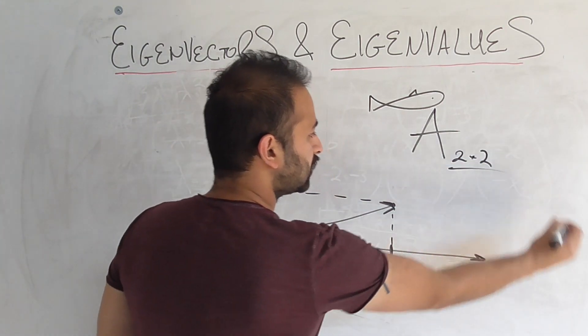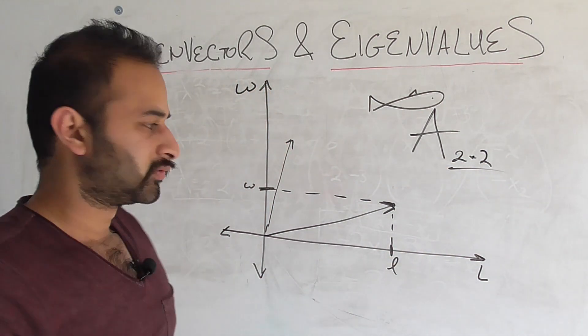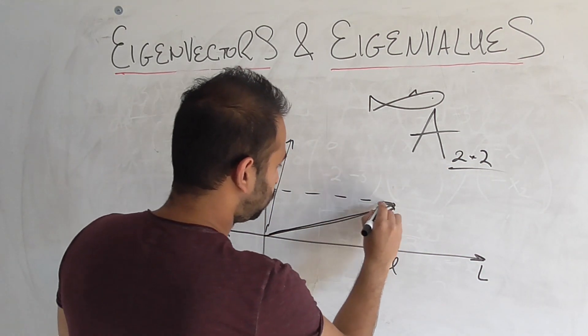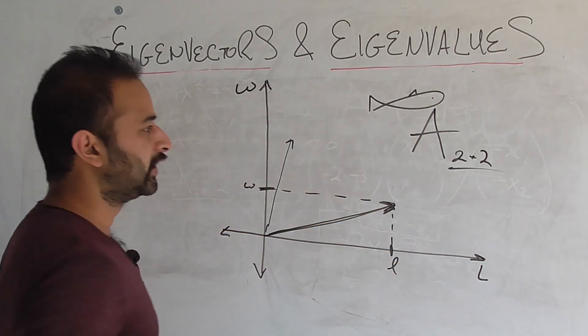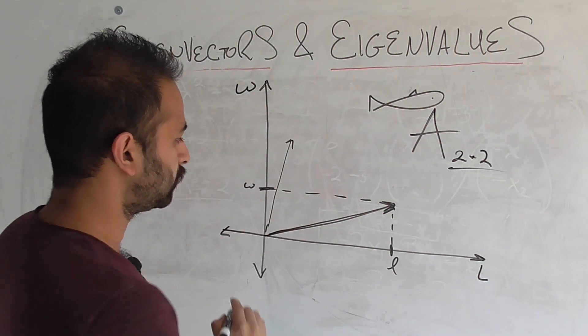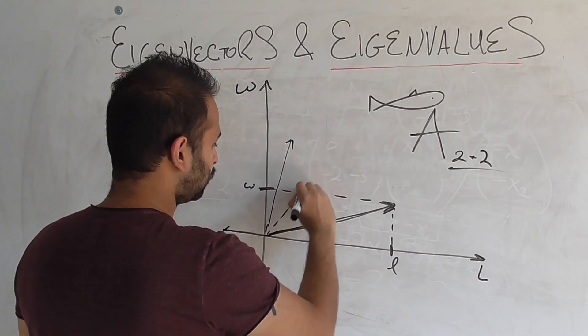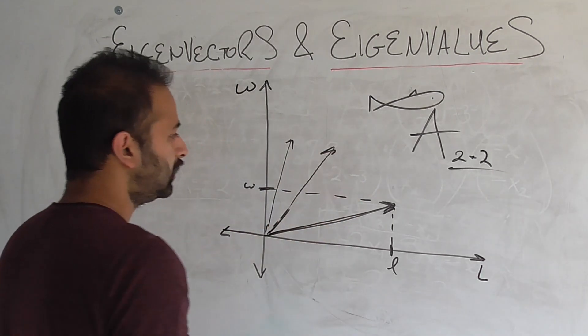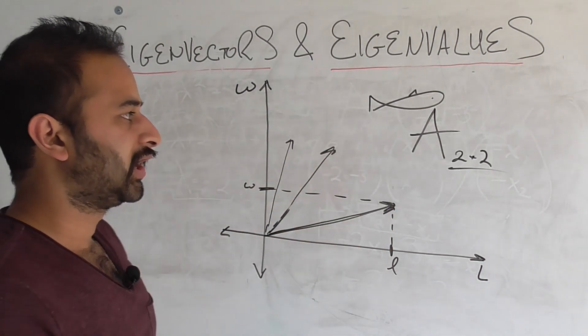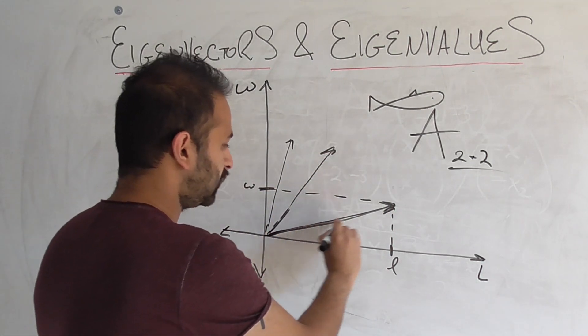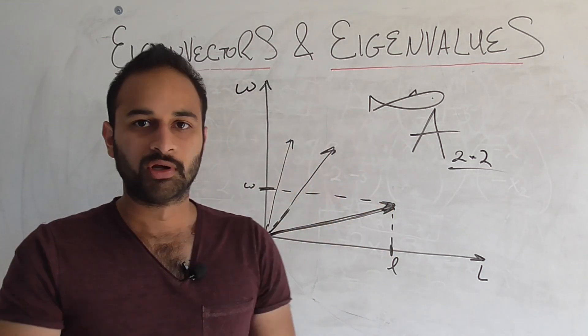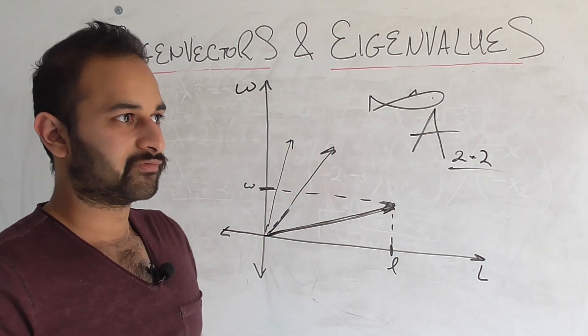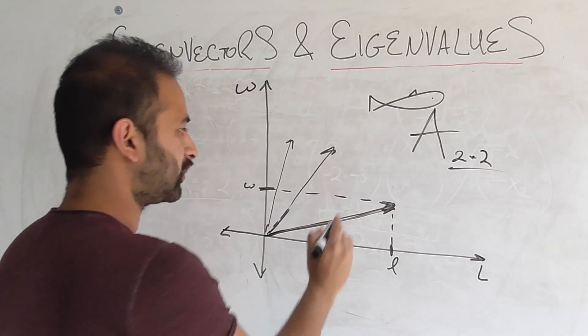So that means that if we take this fish right here and we hit matrix A against that fish, we're going to get some new fish. We're going to get, for example, maybe that vector. And let's just say this linear transformation A represents, given a fish, A maps it to the length and weight of the best friend of that fish or whatever. Okay, so this fish has its best friend as this fish and so on.